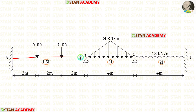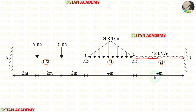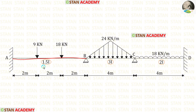Length of AB is 6 meters, length of BC is 4 meters, and length of CD is also 4 meters. All spans have different moments of inertia: for span AB it is 1.5I, for span BC it is 3I, and for span CD it is 2I.